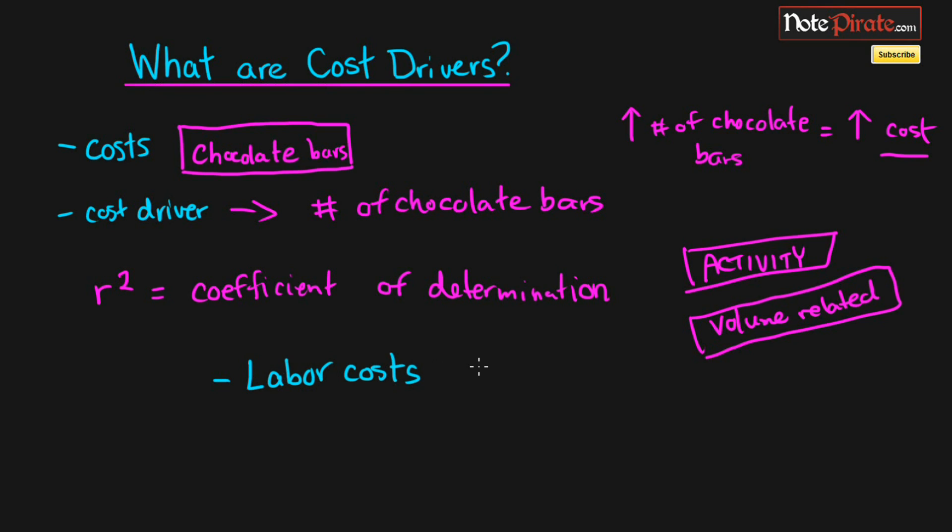Probably the best cost driver for this would be the amount of labor hours. And if you use something like machine hours, obviously that is not as great of a cost driver to calculate labor costs. If we had material costs, I'm thinking that the best cost driver would be the kilograms of material used.